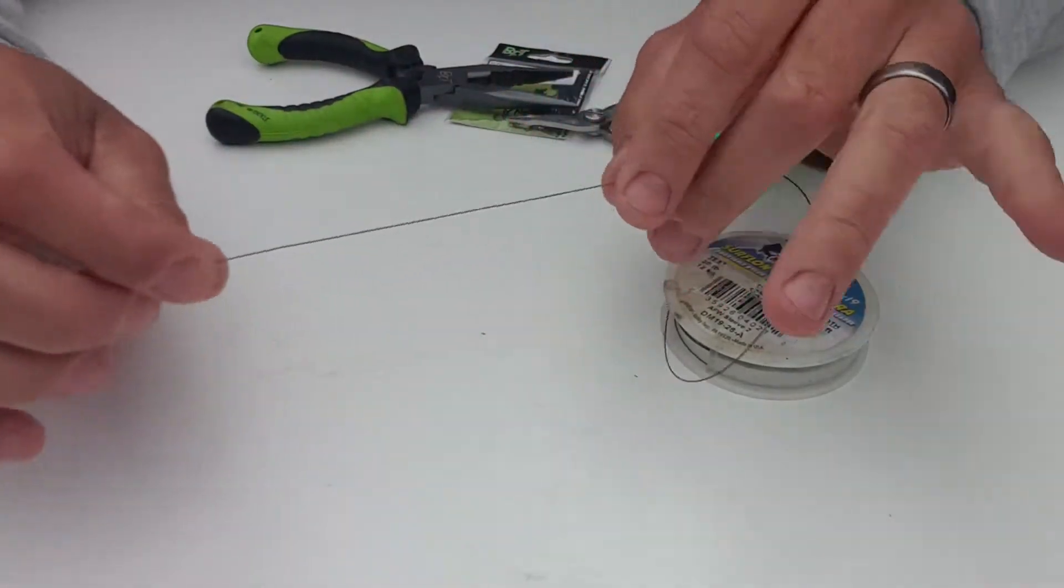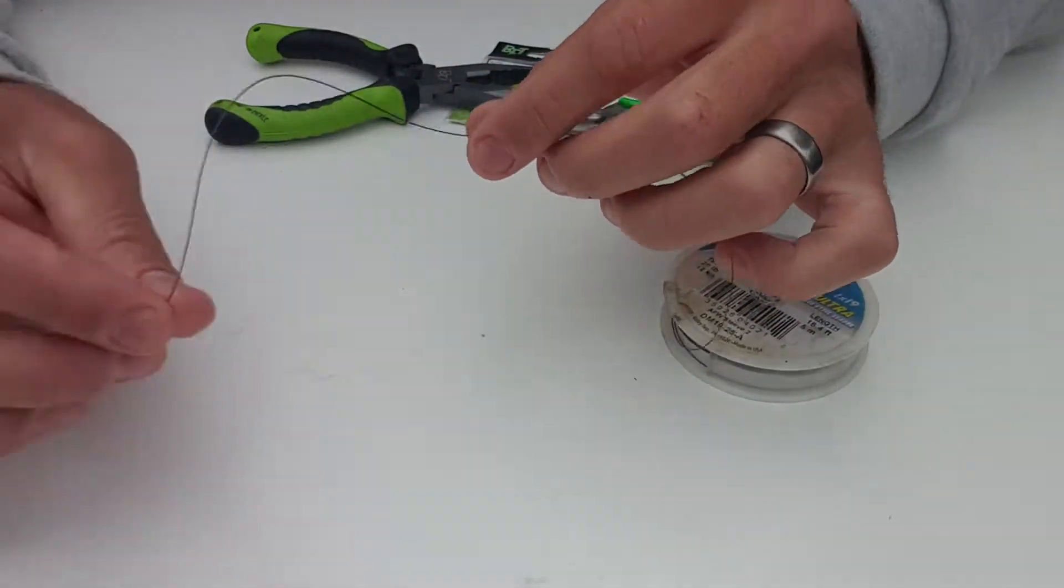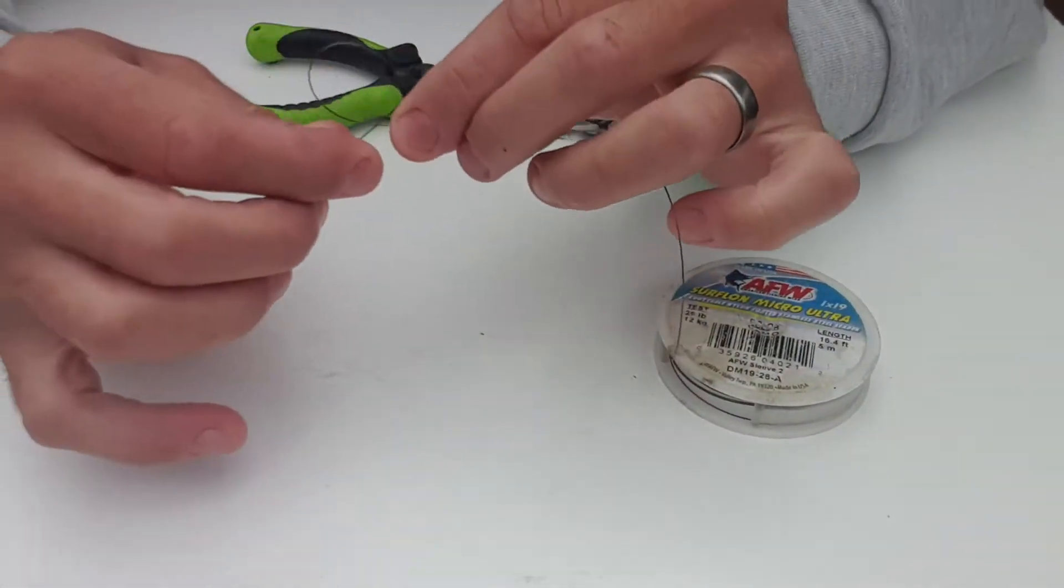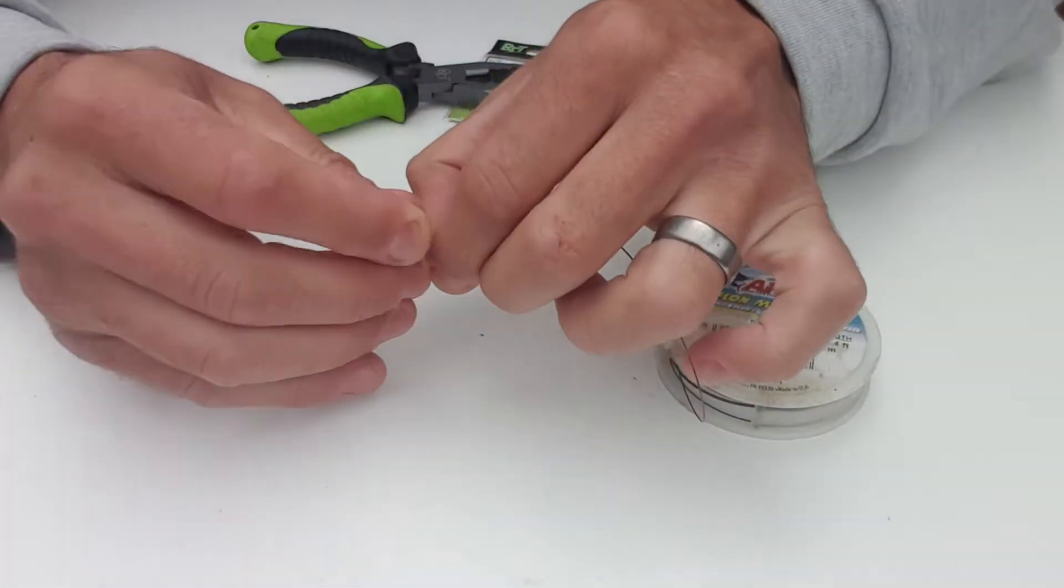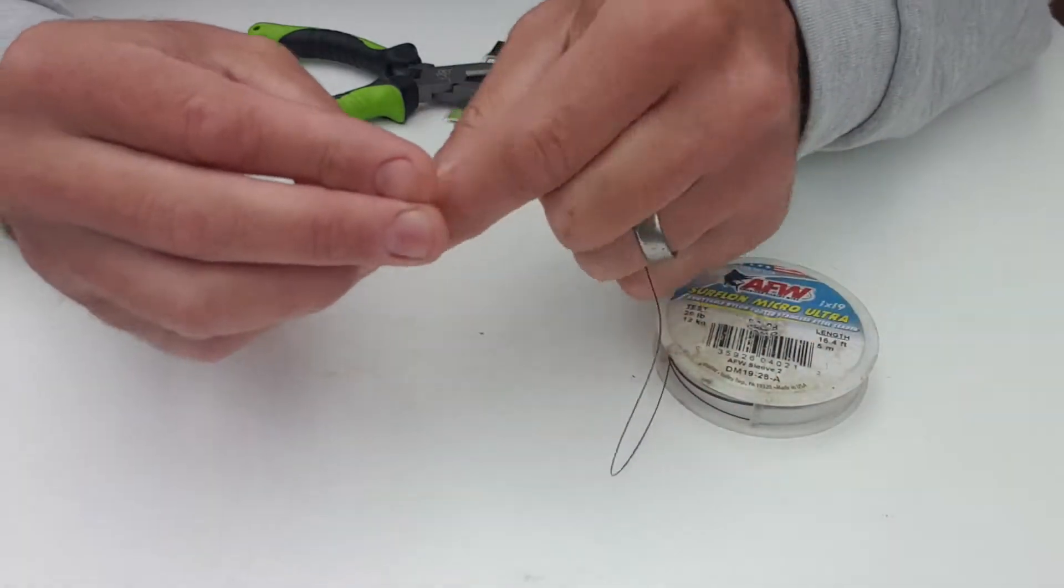So basically this is how I do it. I don't usually use a swivel on the end that I'll connect to my leader. I'll just tie a simple perfection loop like that.